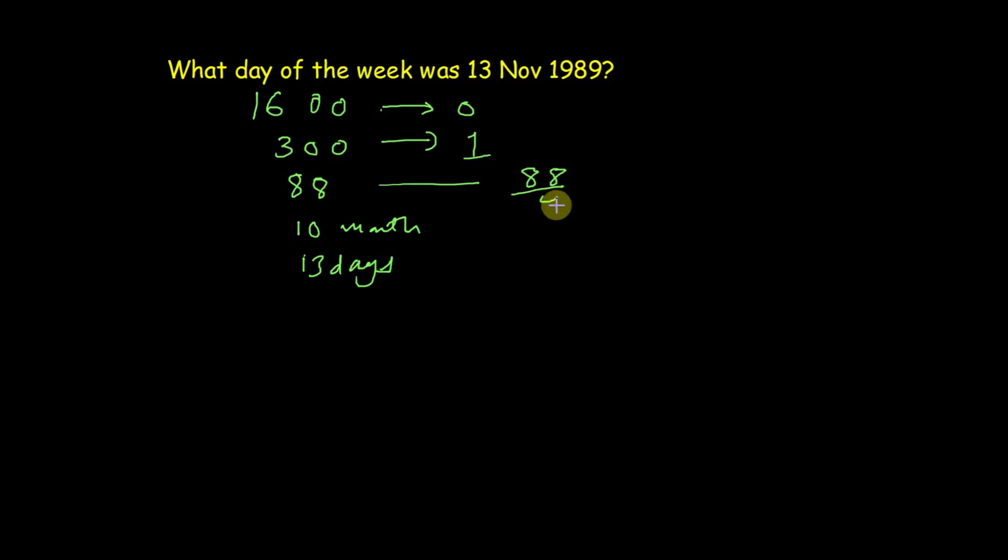Then divide 88 with 4 and we got 22 quotient, so that means 88 years has 22 leap years. And 88 minus 22 equals 66 ordinary years. So that means total number of odd days is 76 plus 22 multiply by 2 which is equal to 110 odd days.